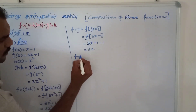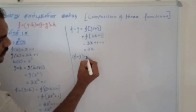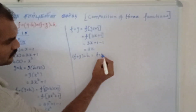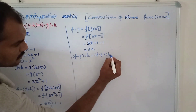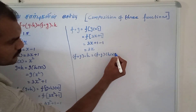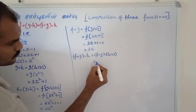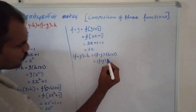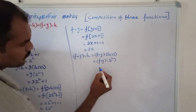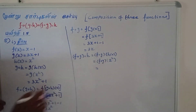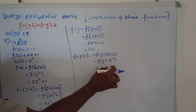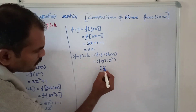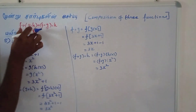F∘G∘H — F∘G into H of X. H of X, F∘G of X, x squared, 3x squared plus 1.